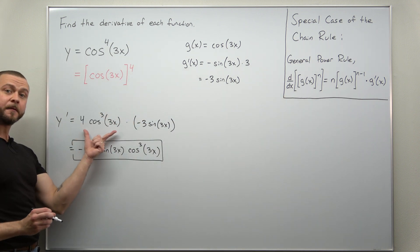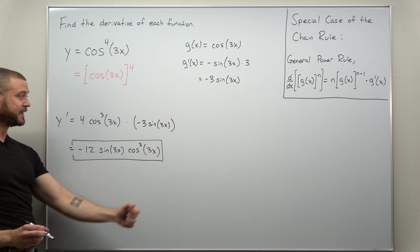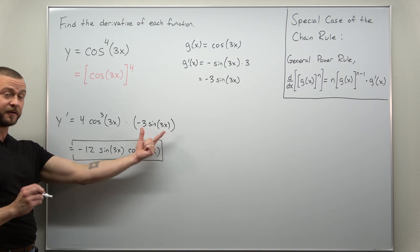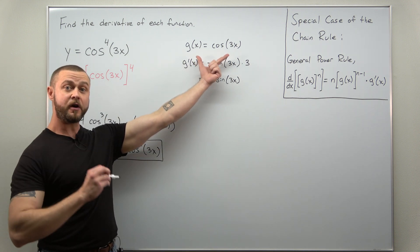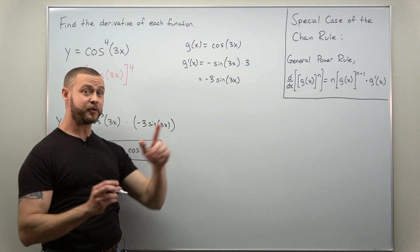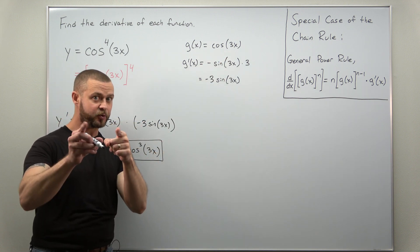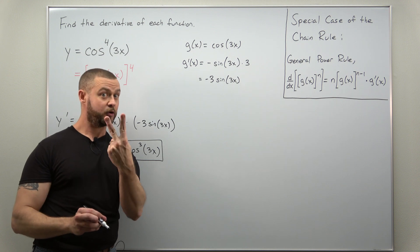And then we applied the chain rule again to get the derivative of the inner function. The derivative of cosine of 3x. We found that here is negative 3 times sine of 3x. So this problem was applying the chain rule twice.